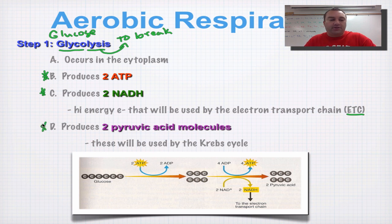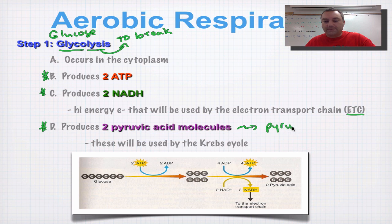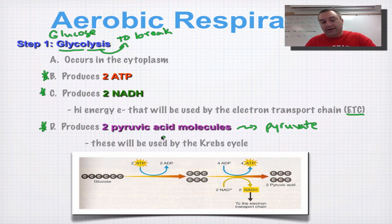And then finally, the third of the twos is two pyruvic acid molecules. Pyruvic acid can also be called pyruvate — pyruvate and pyruvic acid are the same thing. I like to say pyruvate because that's one less word to say. And this will move on to the Krebs cycle.